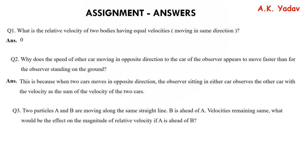Question number 3: Two particles A and B move along the same straight line; B is ahead of A with the same velocity. What is the effect on relative velocity if A is instead ahead of B? Answer: no effect — the relative velocity remains constant.